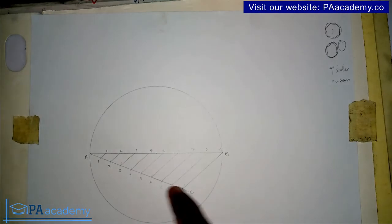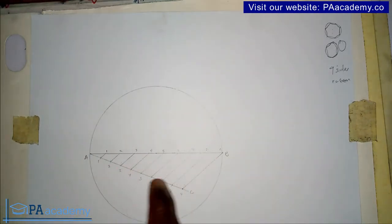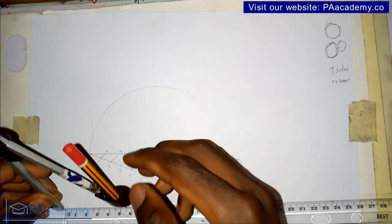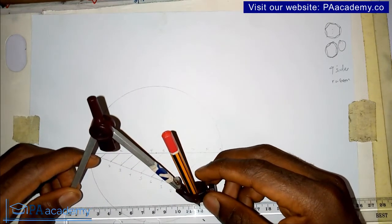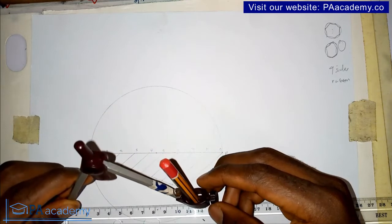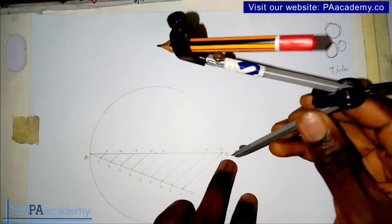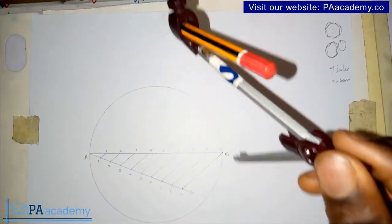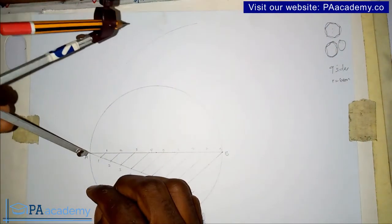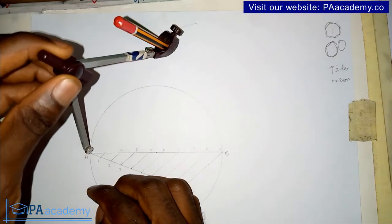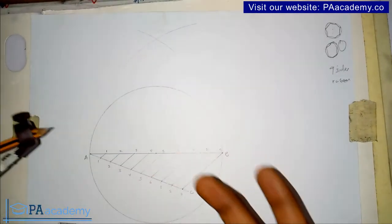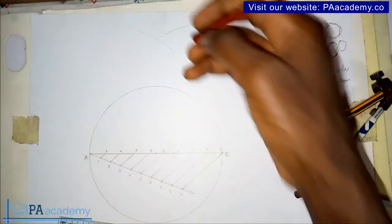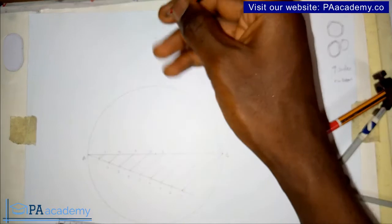Next, bring your compass and measure the full length of AB. Since our radius is six centimeters, the diameter AB is 12 centimeters — which is the same as 120 millimeters. Set your compass to 12 centimeters, place it on point B, and draw an arc. With the same length of 12 centimeters, draw another arc from point A. The point of intersection of these two arcs, let's call it point D.